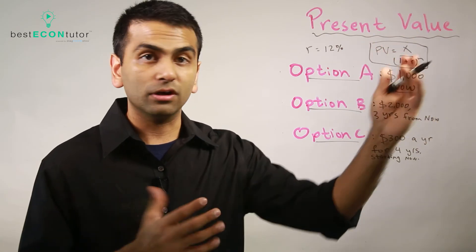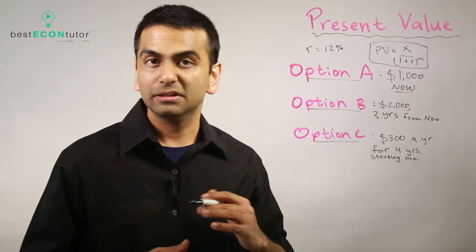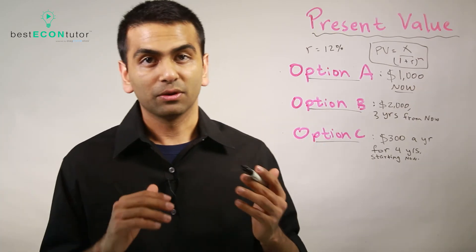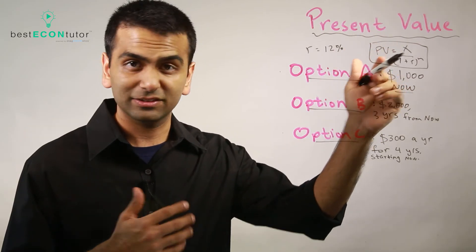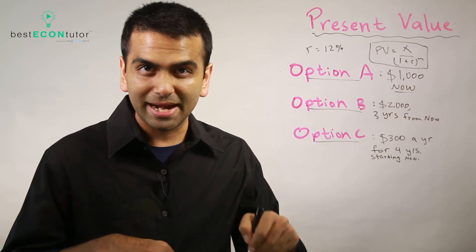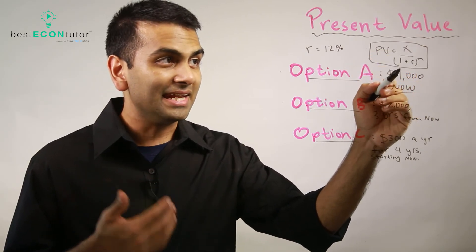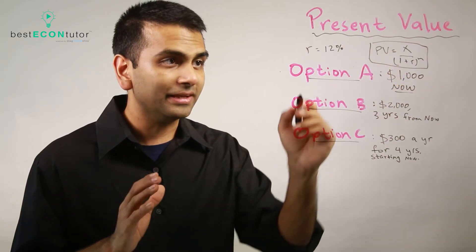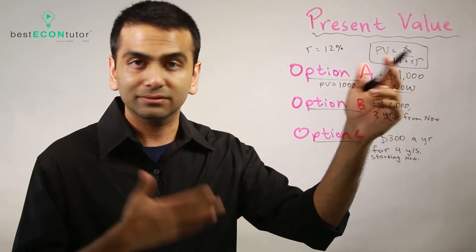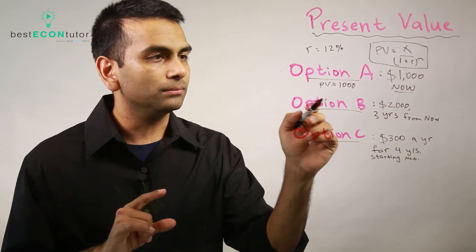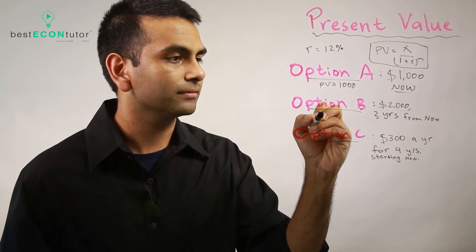The way to evaluate these options is to convert everything into today's dollars — present value. The formula is: the present value of X dollars given to you N years from now equals X divided by (1 + R) to the power of N. You can see that as N — the number of years in the future — gets larger, the denominator gets bigger, making the present value smaller. Money further in the future is worth less today. The higher the interest rate R, the less future money is worth in present terms.